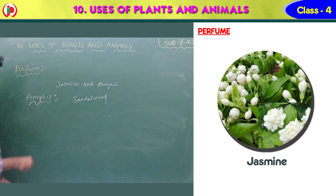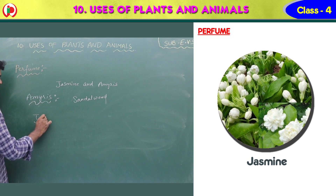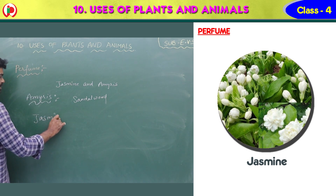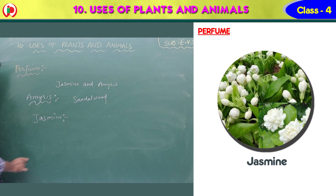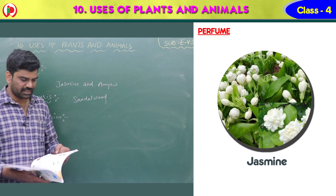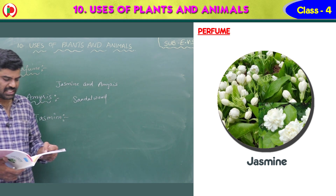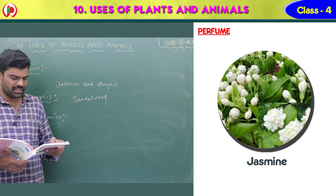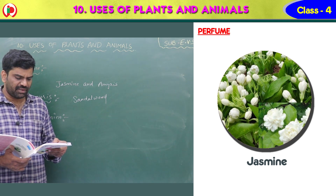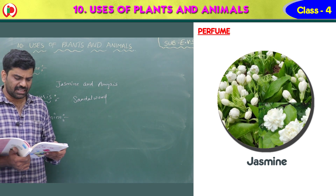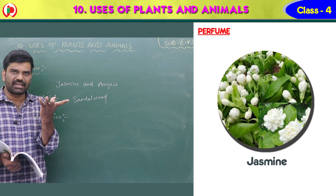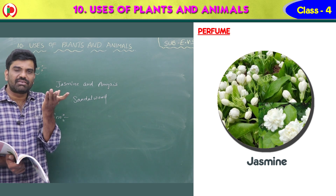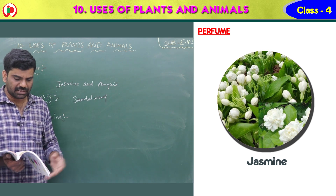Next one is jasmine. Children, do you know the jasmine flower? What is its color? Yes, white. The jasmine plant is revered for the very delicate scent it gives off when it blooms. When it blooms, children, it gives off a very superb smell.